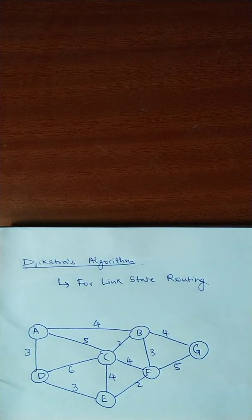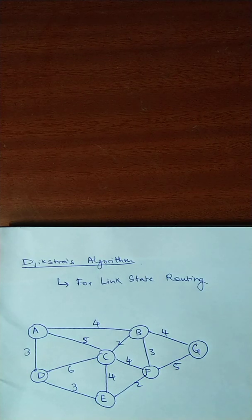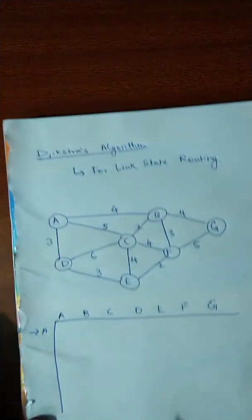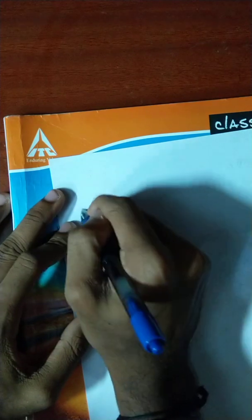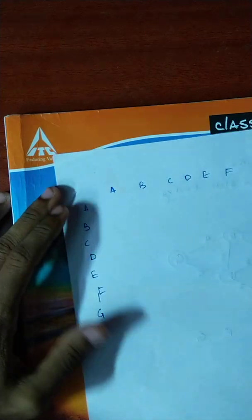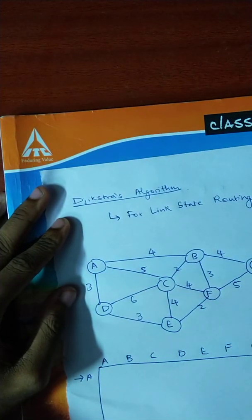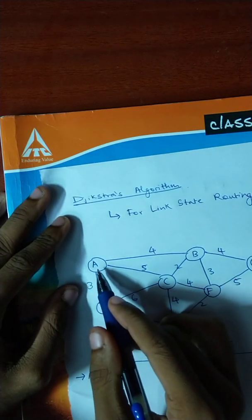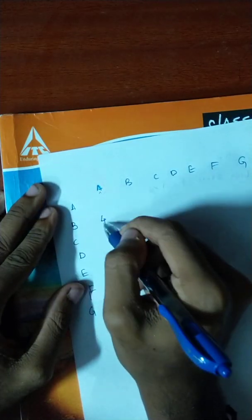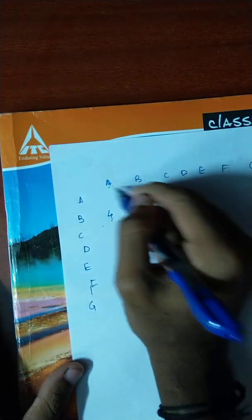To use Dijkstra's algorithm to find the shortest path between any two given nodes, we first use a link state database between all the nodes. For the link state database we'll be writing a table of all the nodes A, B, C, D, E, F, G — a seven by seven table. Based on the distance from one node to the other we draw the link state database. For example, the distance between A and B is 4, so we write 4 where A and B intersect.